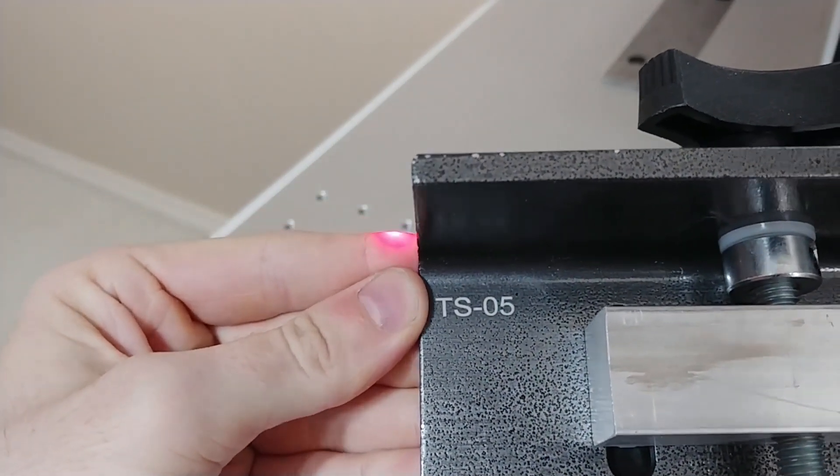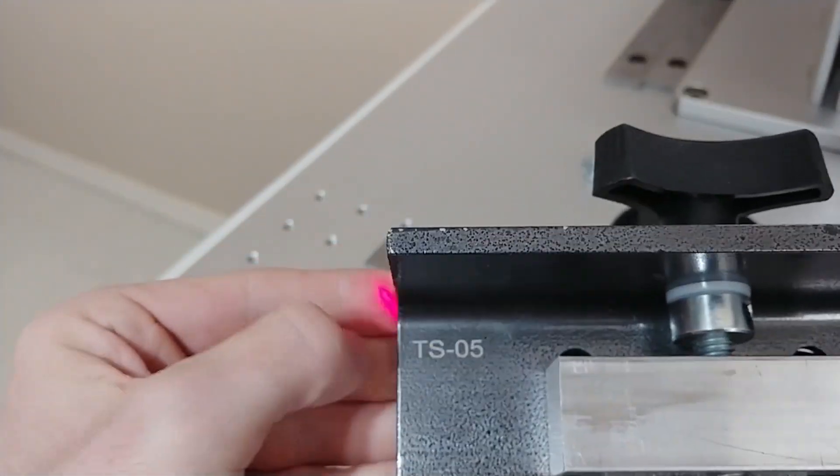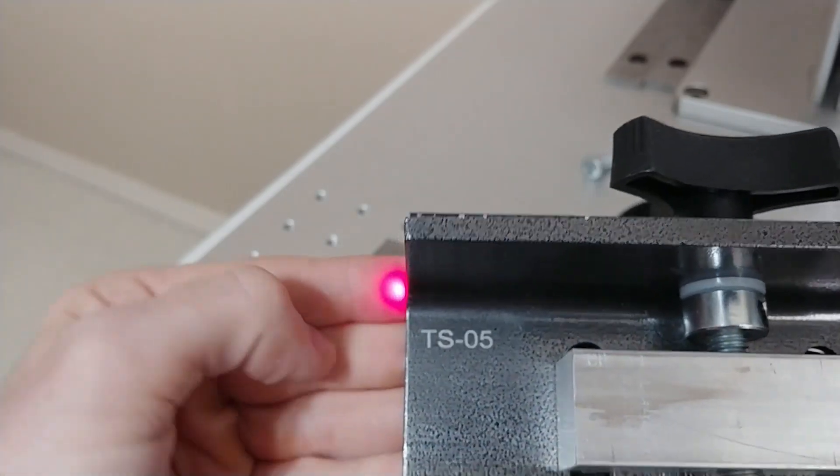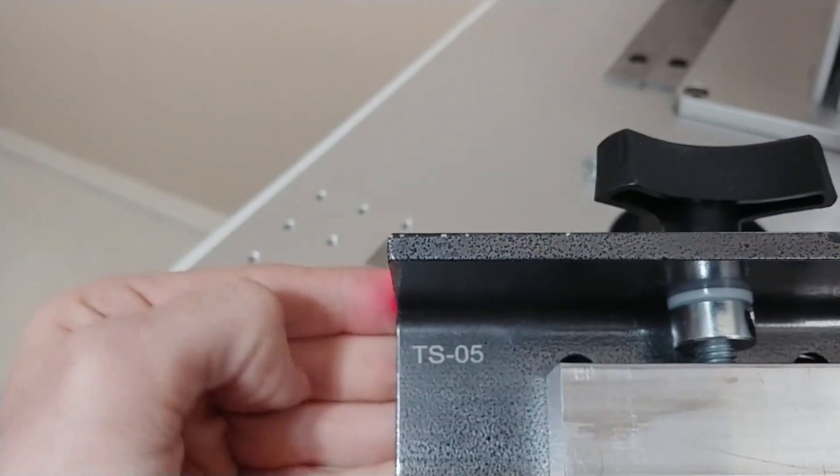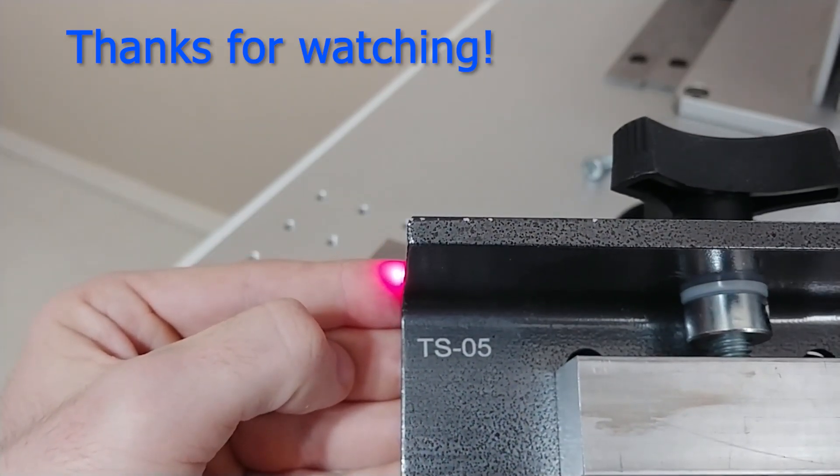So I guess those are the settings you need if you want to blast through it. If you don't want to blast through it and you just want to do a surface mark, you can cut the power in half and probably increase your speed by twice as much, or five times as much I suppose. Looks good though.